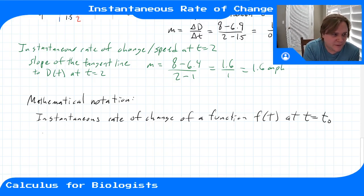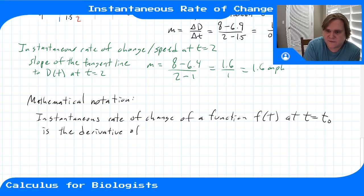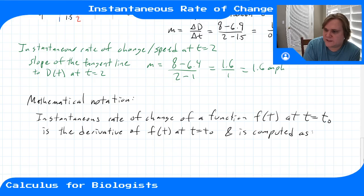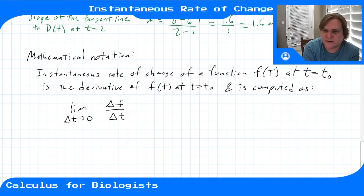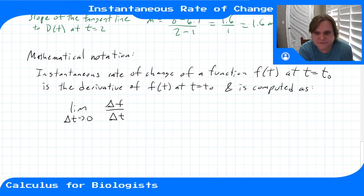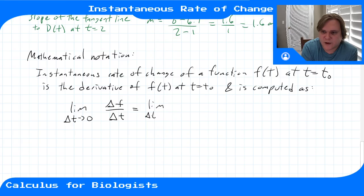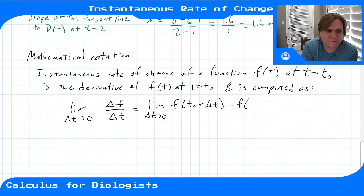The instantaneous rate of change of a function at a point is also called the derivative of f at that point. We compute it using the following notation: it is the limit as Δt goes to zero of Δf/Δt — so the limit as this time interval goes to zero. Written out: the limit of [f(t₀ + Δt) − f(t₀)] / Δt. This gives us the derivative once we learn how to compute limits.